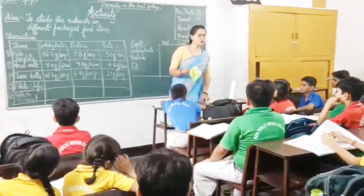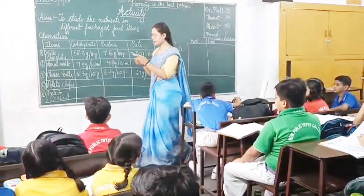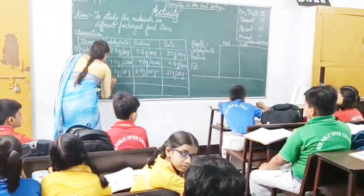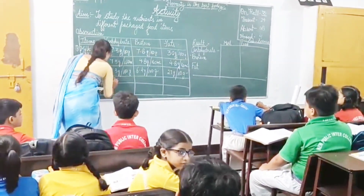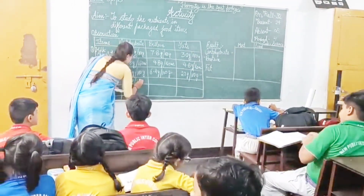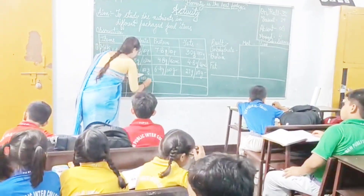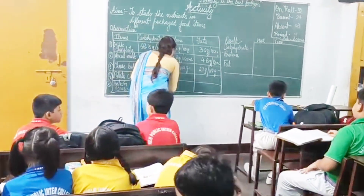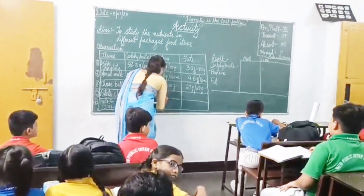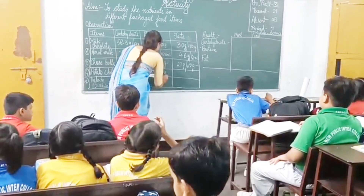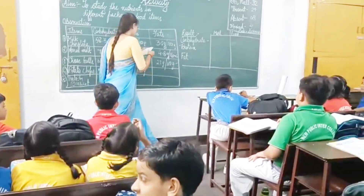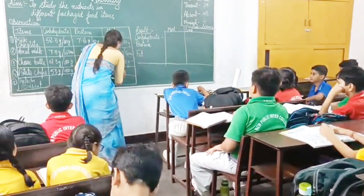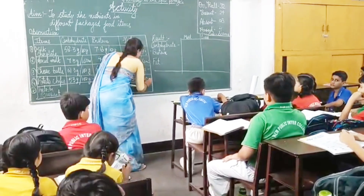Then we come to potato chips, per 100 grams. We have carbohydrate 53 grams per 100 grams. Then we have protein 6.7 grams per 100 grams. Then we have fat 33.1 grams per 100 grams.